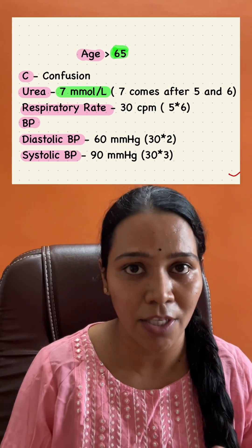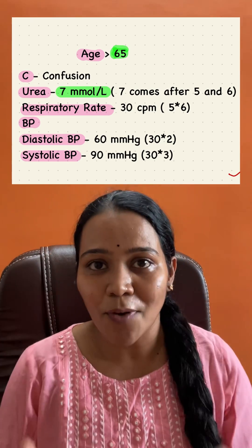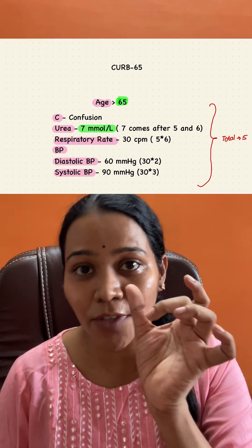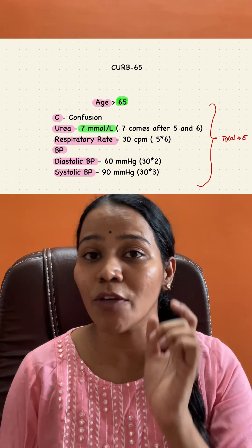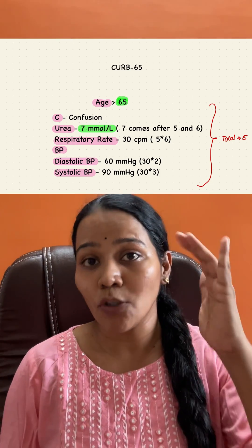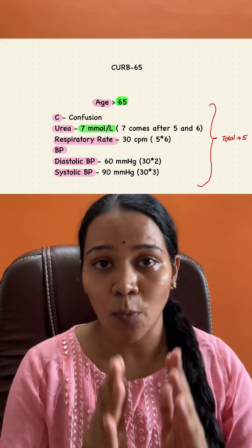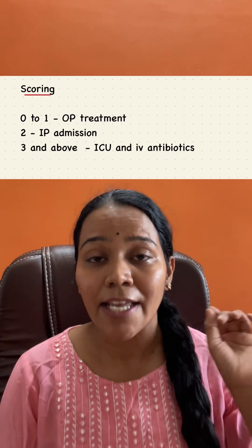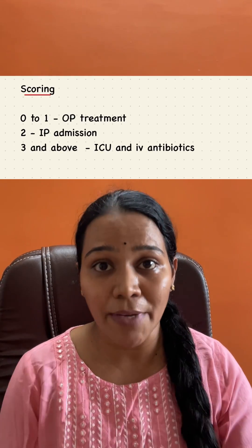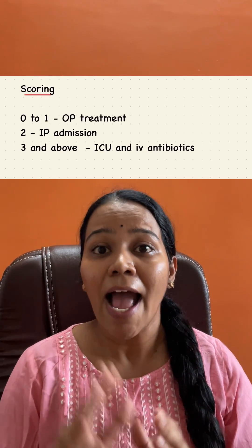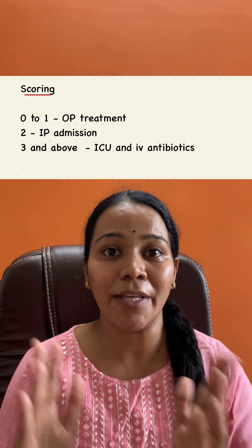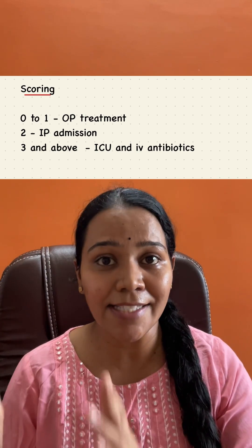These parameters form the scoring system of CURB-65. Each parameter scores one point, giving a total of five points. Score 0 or 1: OPD treatment. Score 2: inpatient treatment. Score 3 or more: patient may require intensive care along with IV antibiotics.